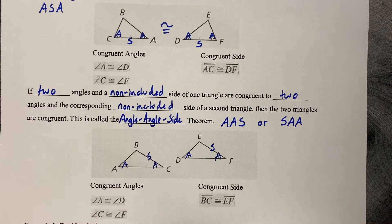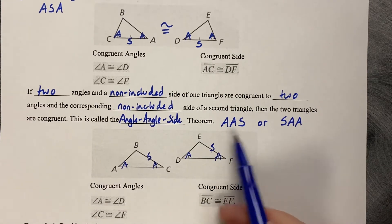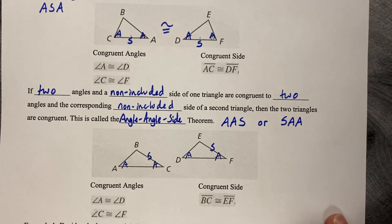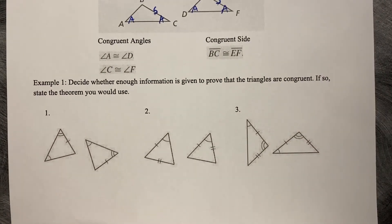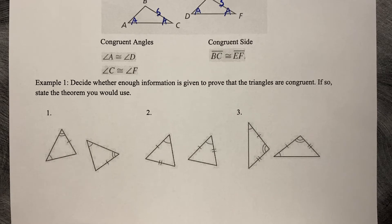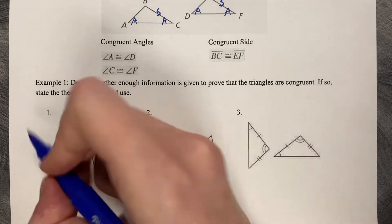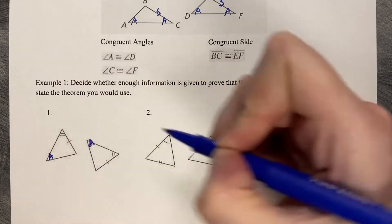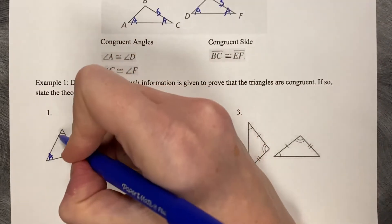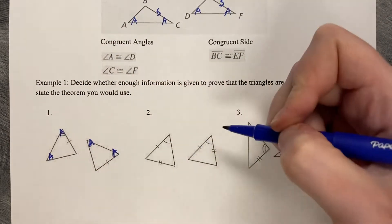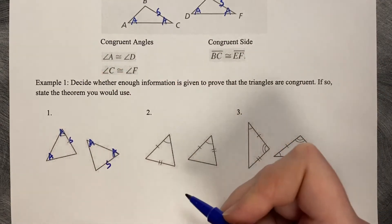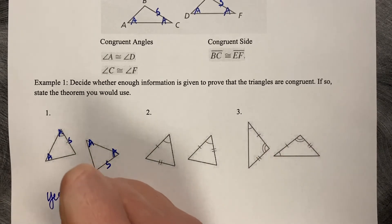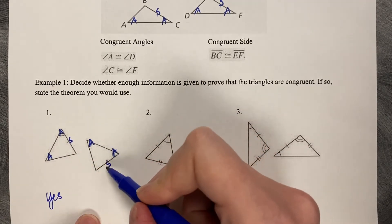Let's decide whether there's enough information to prove that the triangles are congruent, and if so, state what theorem you used. For number one: this angle matches this angle, a second angle matches a second angle, and the side length is not between them — a side and a side. So yes, by angle-angle-side.